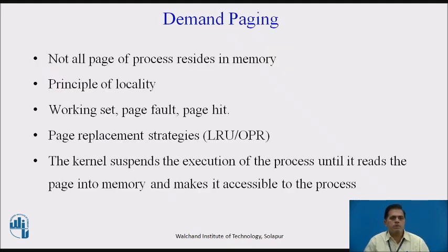Now we go to demand paging, a very important concept in the Unix file system. Demand paging is similar to a paging system with swapping, where processes reside in secondary memory and pages are loaded only on demand, not in advance. When a context switch occurs, the operating system does not copy any of the old program's pages to disk or any of the new program's pages into main memory. Instead, it begins executing the new program after loading the first page and fetches that program's pages as they are referenced. If the program references a page not available in main memory, a page fault occurs, and control transfers from the program to the operating system to bring the page back into memory.